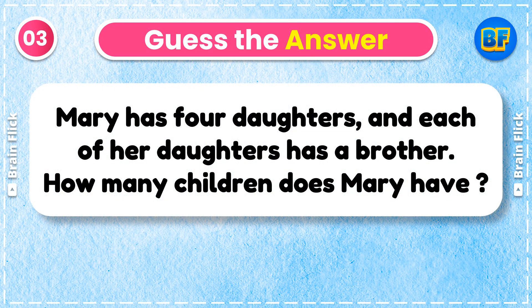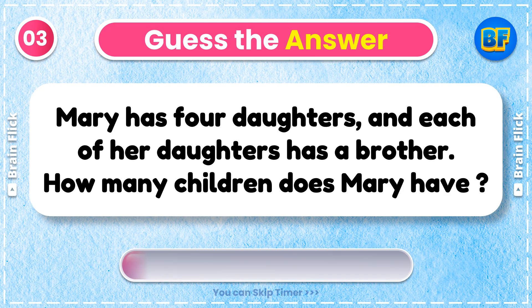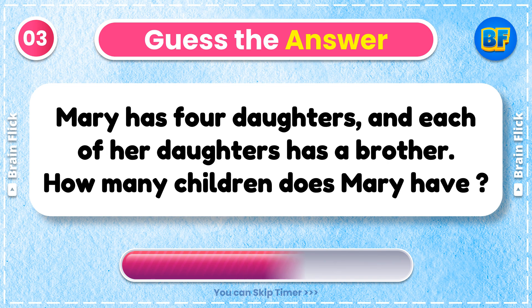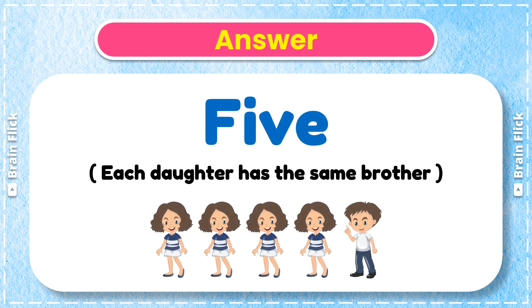Riddle 3. Mary has 4 daughters, and each of her daughters has a brother. How many children does Mary have? Answer: 5. Each daughter has the same brother.